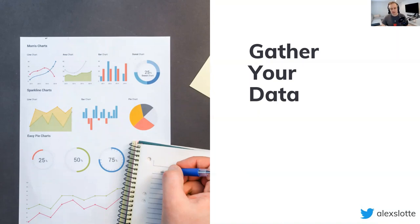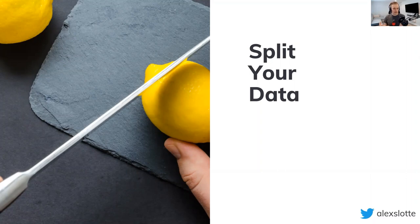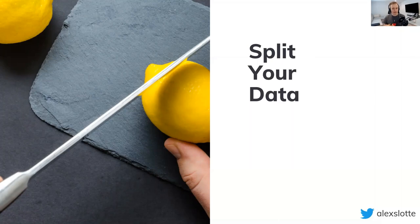Once you have your data, split it into two parts: a training set and a test set. The training set - usually 80 to 90 percent - is used for the training process. The rest is stored away, hidden in a locked box, so that when your model is ready you can try to predict on that data and evaluate how good it was. It's very important not to show the test data to the model during training, because it would memorize that data.